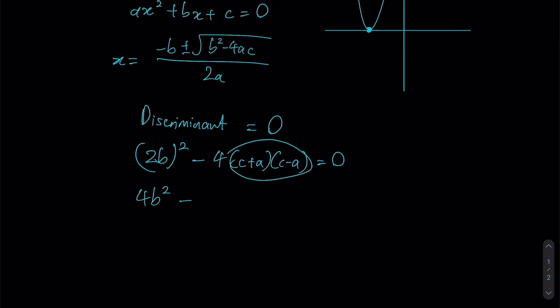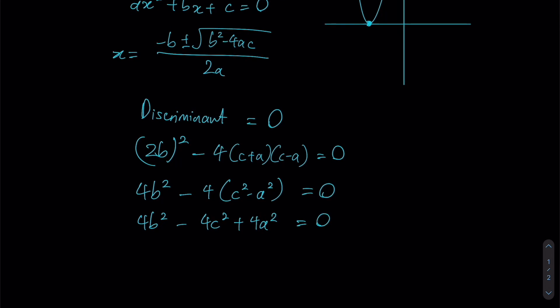At this stage, notice that I have a form (c + a)(c - a) which should therefore give rise to c² - a² based on our identities. So I have 4b² - 4(c² - a²) = 0, which gives 4b² - 4c² + 4a² = 0.